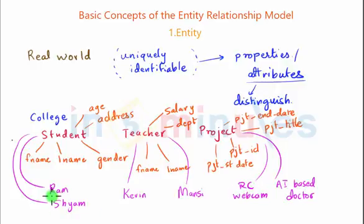So these specific instantiations are what are entities. Now each of these entities will have different values for the attributes that we have discussed and that is how they will be uniquely identifiable.